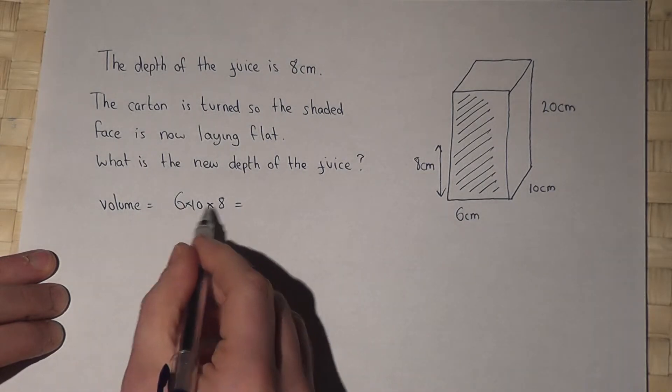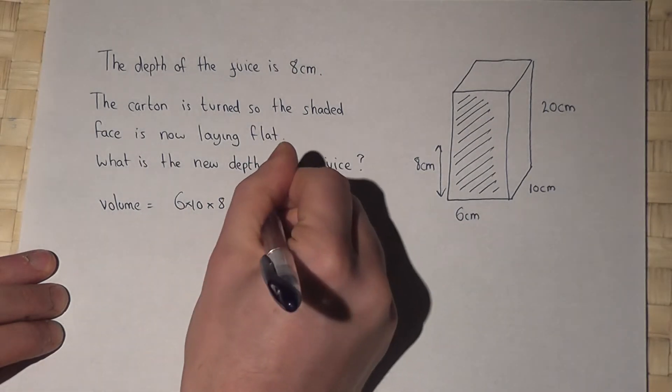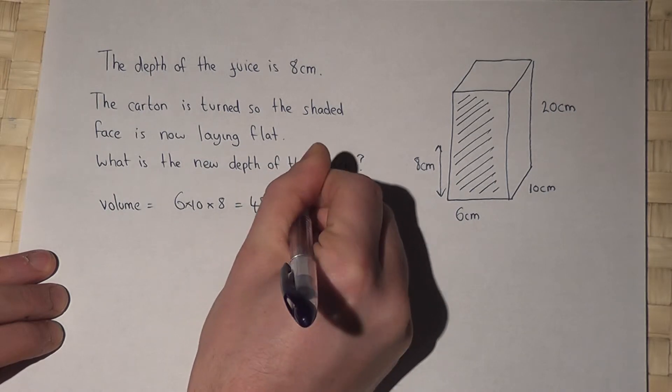Now 6 times 8 is 48, so times 10 is 480 centimetres cubed.